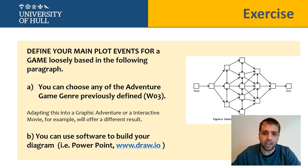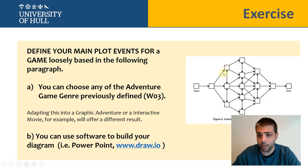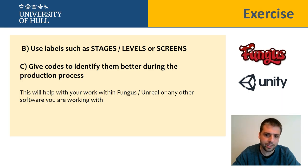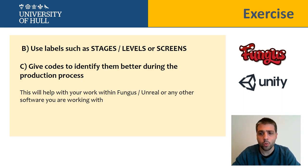Each of these squares can be a label, can be a state, or can be a screen — or even a page if you are talking about a visual novel. In any case, whatever you decide these squares are, it could be a good idea to use labels to identify the stages, the labels, or the states you are working with.